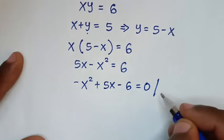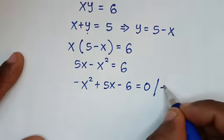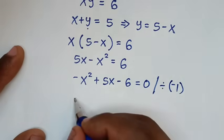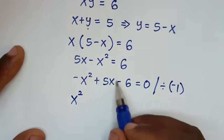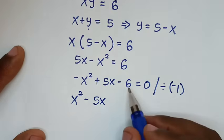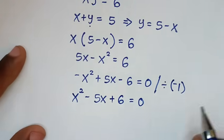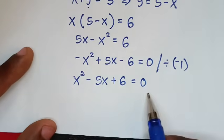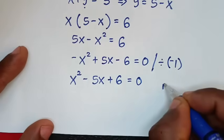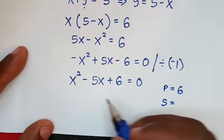So it will be minus x squared plus 5x minus 6 equals 0. Then from here, this equation — negative x squared — we make this positive by dividing by negative 1. So: negative x squared divided by negative 1 is positive x squared, 5x divided by negative 1 is minus 5x, negative 6 divided by negative 1 is plus 6, equals 0. Now this quadratic equation can be solved by grouping and factorization, where the product is 6 and the sum is equal to negative 5.